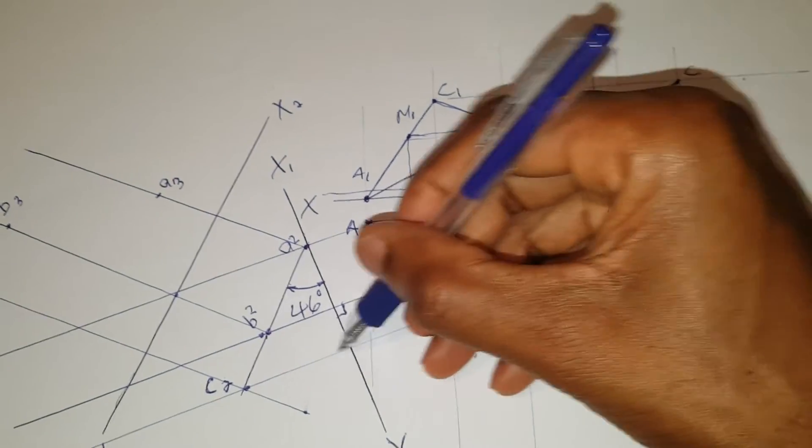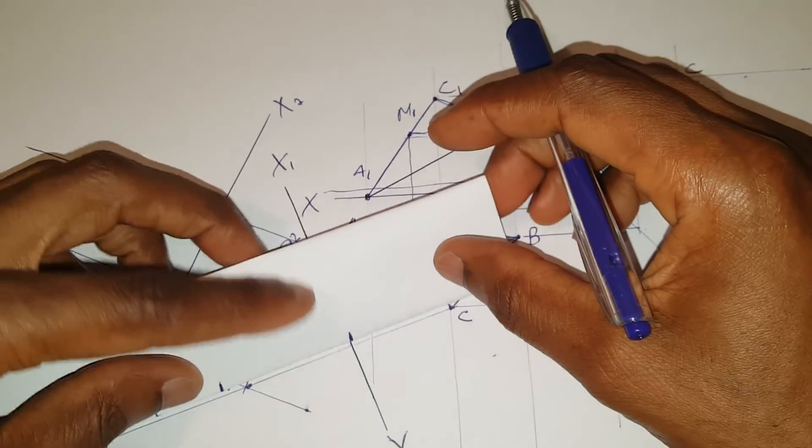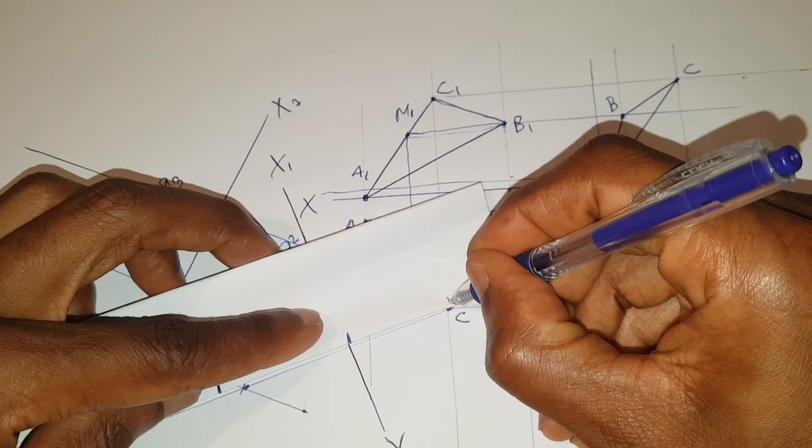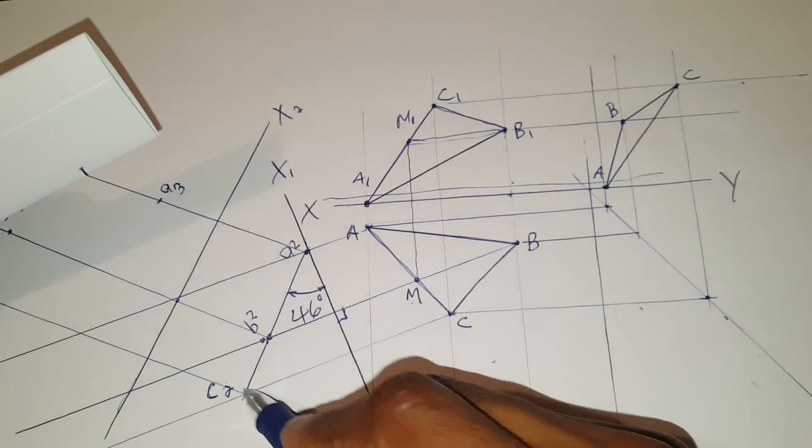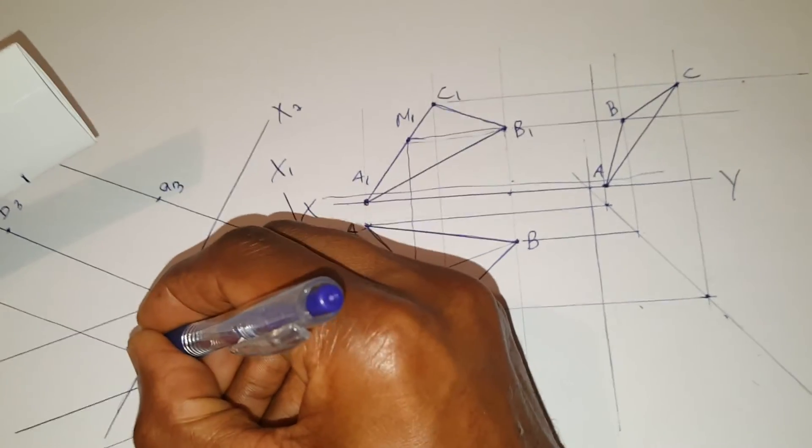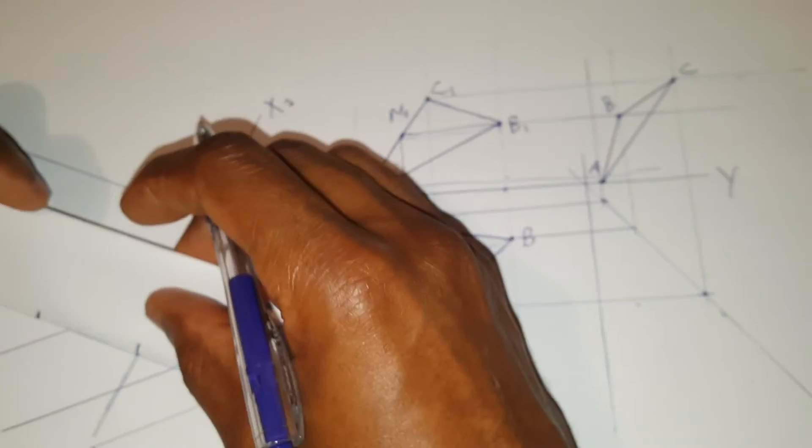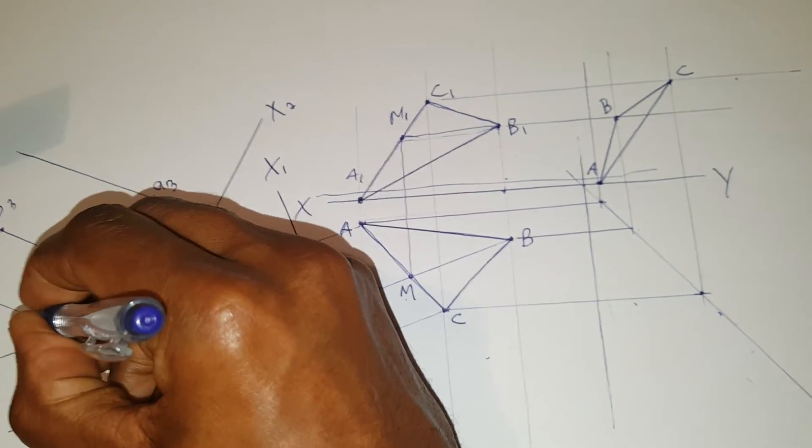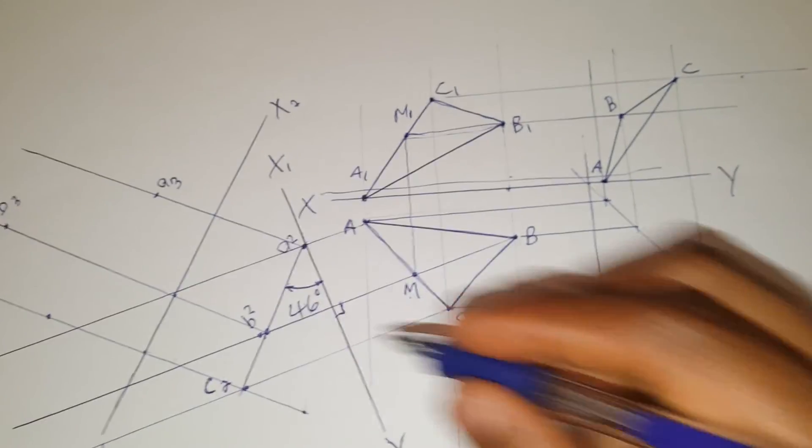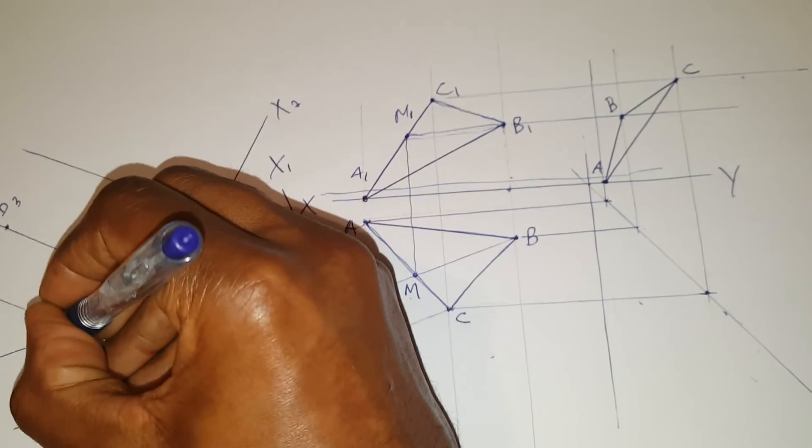I then go across to C and transfer C distance onto the corresponding C line. Starting here. And this becomes C3.